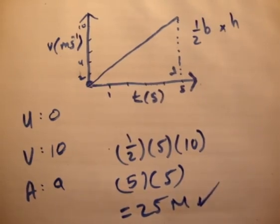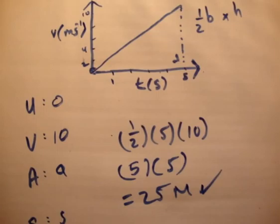So you can get the distance either by using the UVAST formulae, or you can use the area of the graph. This was a very simple one, not all of them are as straightforward as that. So thanks for watching, pass it on to your friends, and please subscribe to my channel.